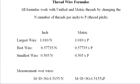Here's a list of three wire formulas that are used in both the unified inch system and the metric system for measuring thread pitch diameters. The largest wire is 1.010 either divided by N in the unified inch system or times pitch P in the metric system. As long as the diameter of the wire falls between the largest wire size and the smallest wire, 0.505 divided by N, we can use it. In a perfect scenario, we would like to have a best wire size, 0.57735 divided by N.